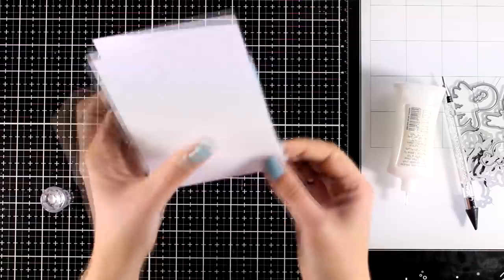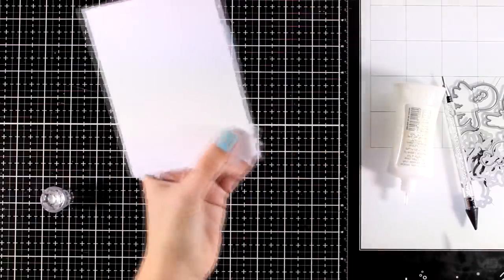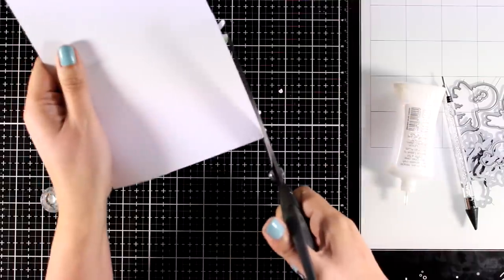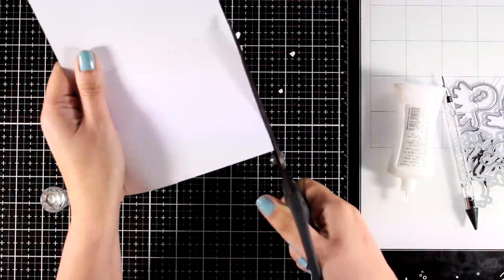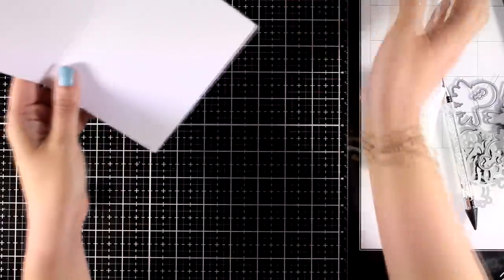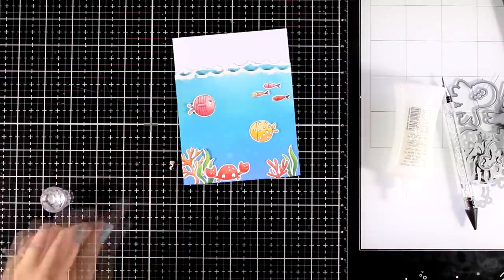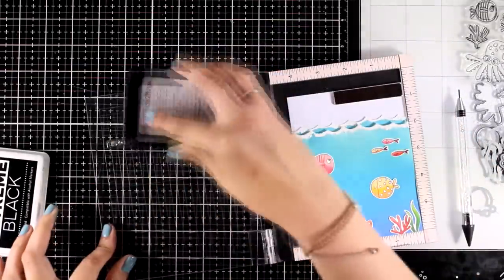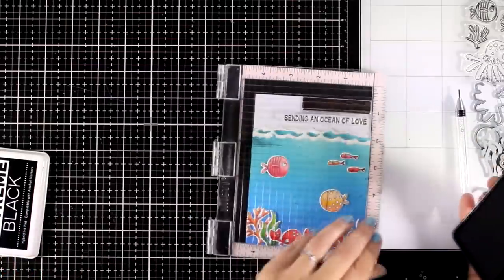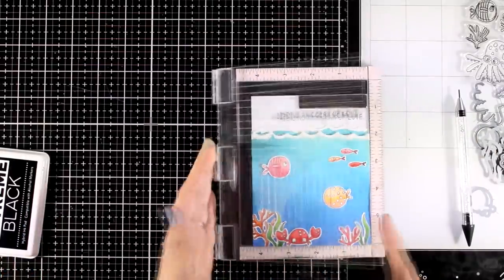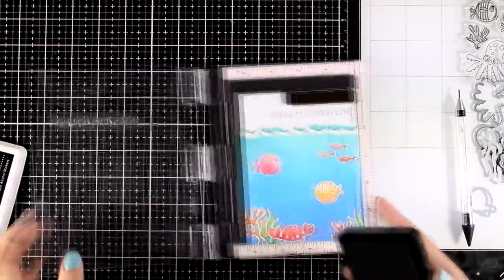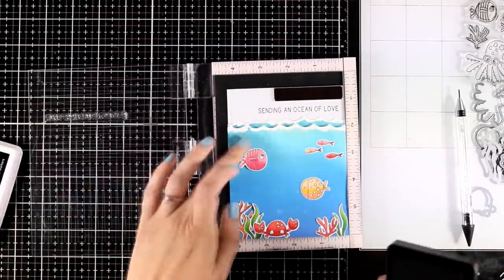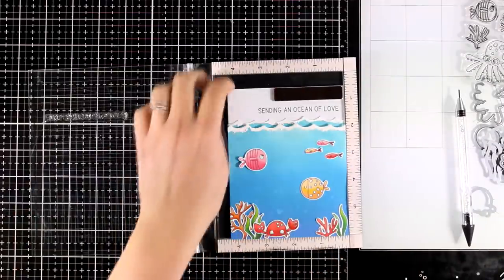I am a big fan of this glue just because it grabs really quickly, it never clogs on me, and it has a really fine tip. I used my scissors to cut off any excess paper just to make sure that everything is nice and neat. And now all I have to do is to stamp the sentiment. For that I'm going to use my MISTI because I have already finished my card and I don't want to make any booboos now that everything is done.